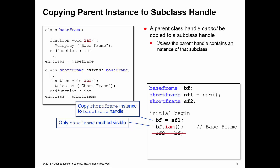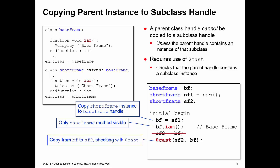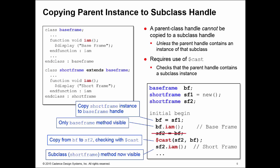You need to check the assumption, and we do this by calling a cast. Dollar cast copies the pointer from bf into sf2 and checks that the pointer is pointing at an instance in memory which is compatible with the short frame handle sf2 — basically checking that bf is pointing at a short frame instance. If the cast succeeds, you can now access the methods of the sf2 handle, which returns 'I am a short frame.' The short frame instance is recovered out of the base frame handle.